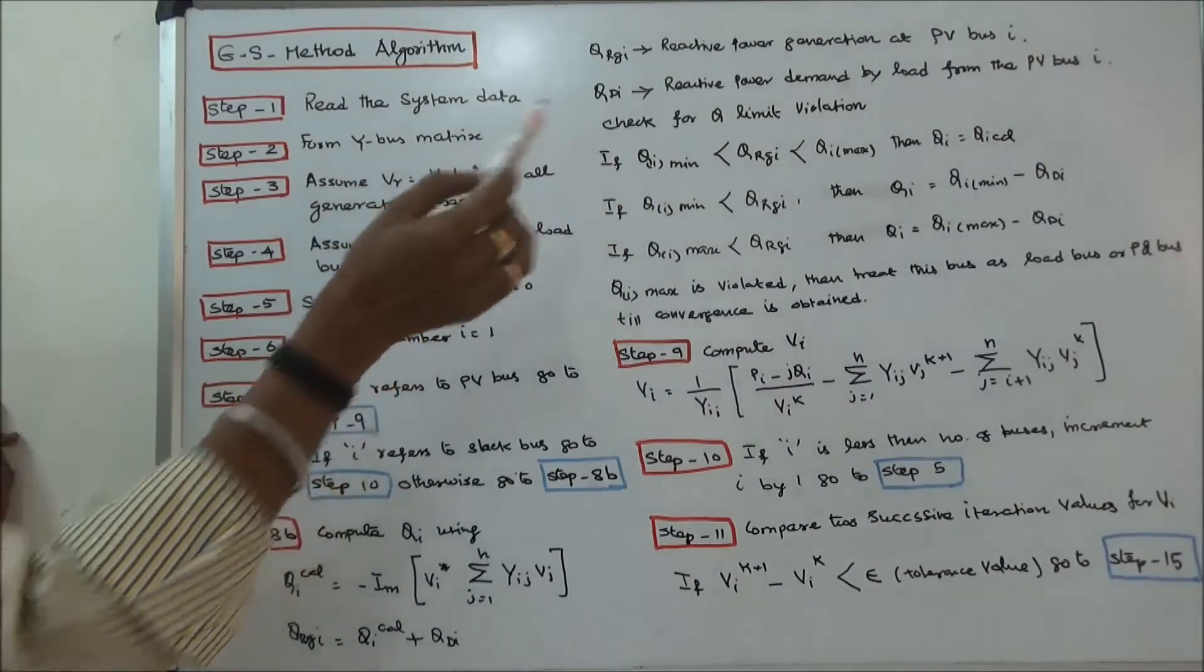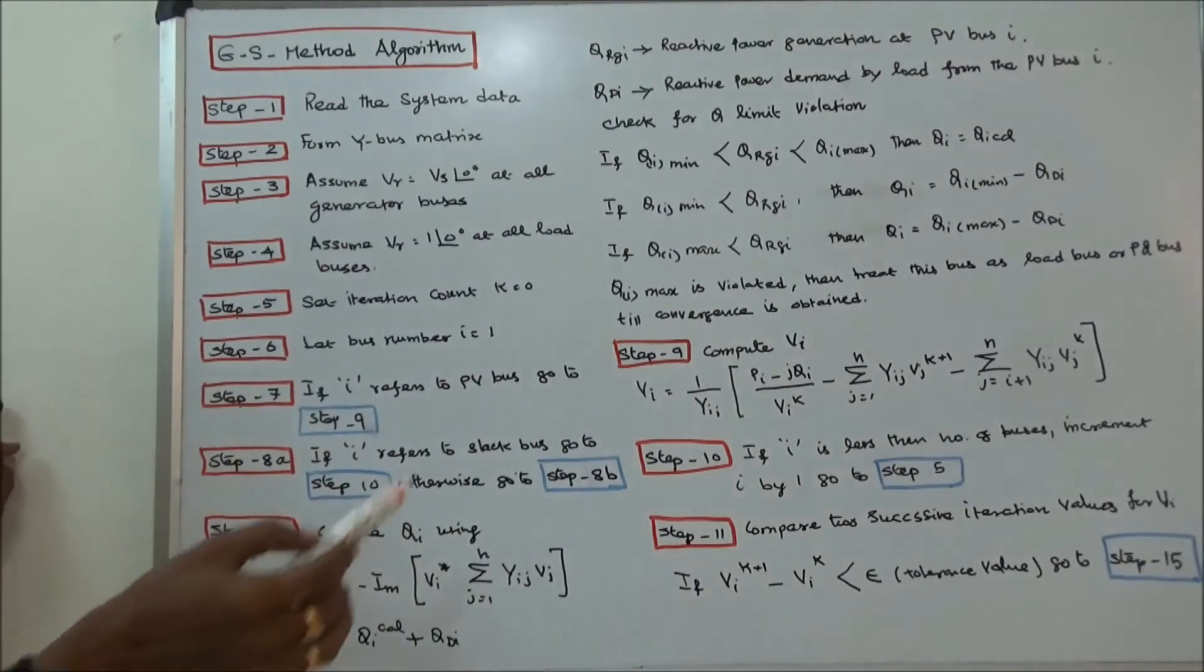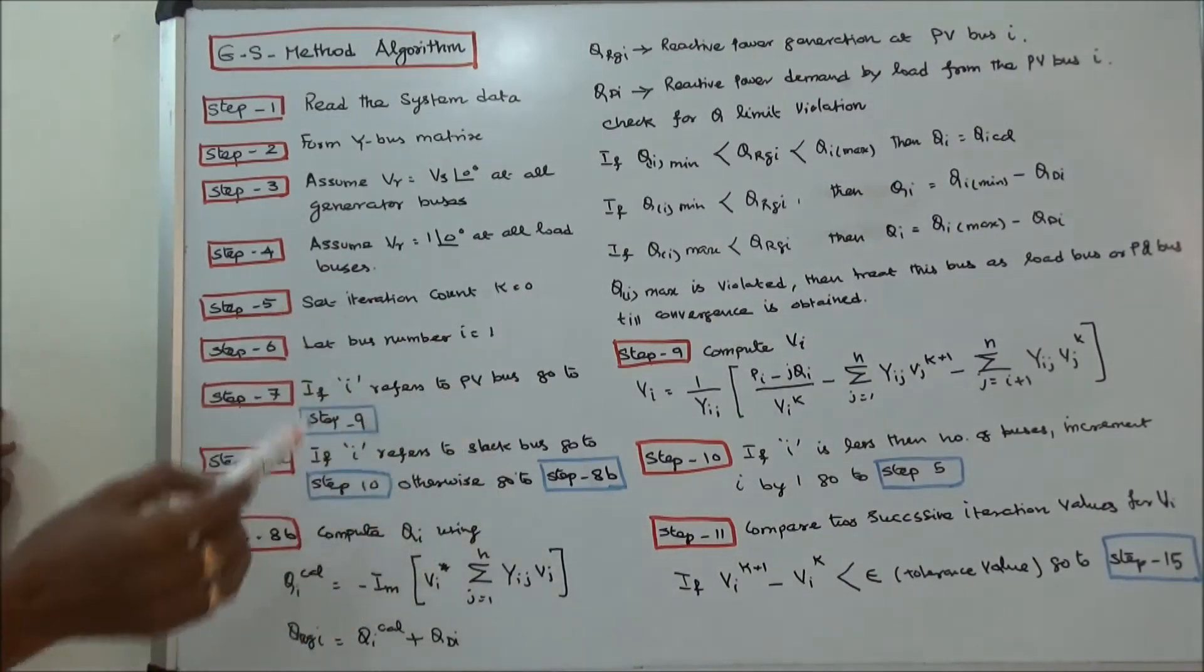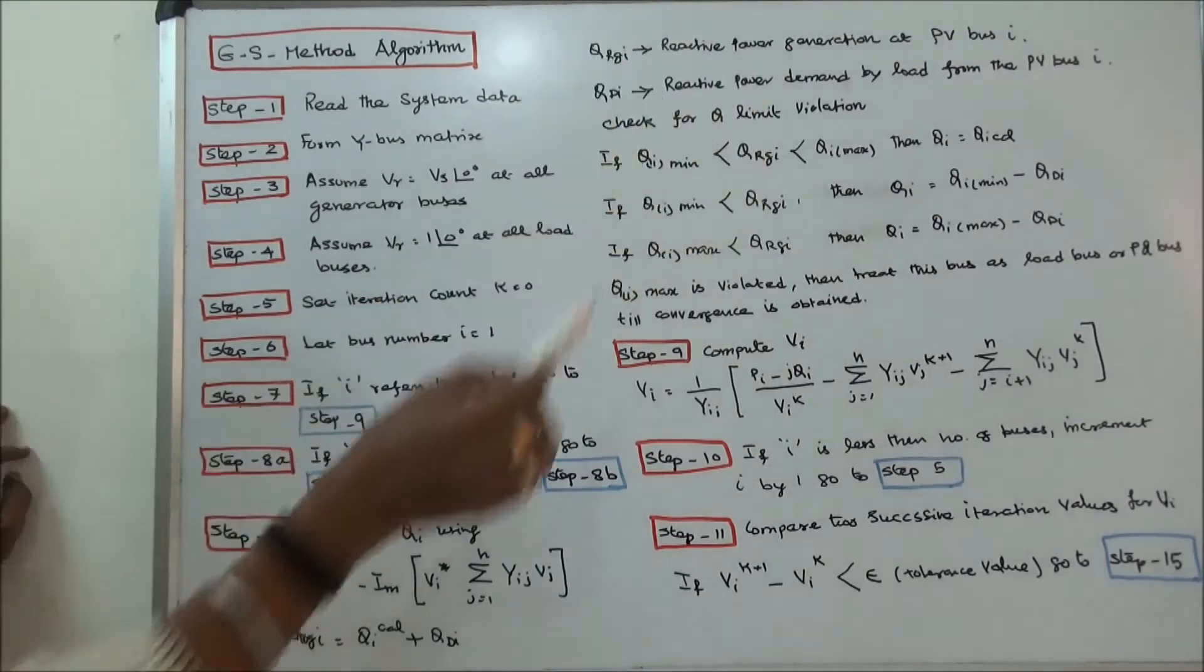Check for reactive power limit violation. If the calculated value is within the limits, QI is equal to QI calculated.